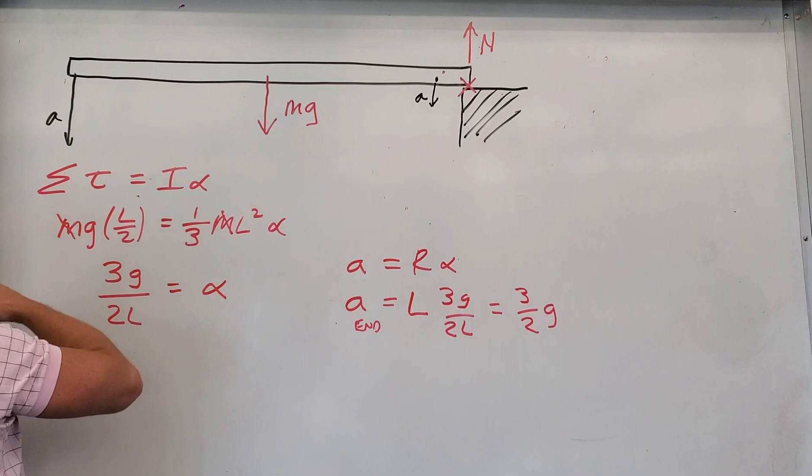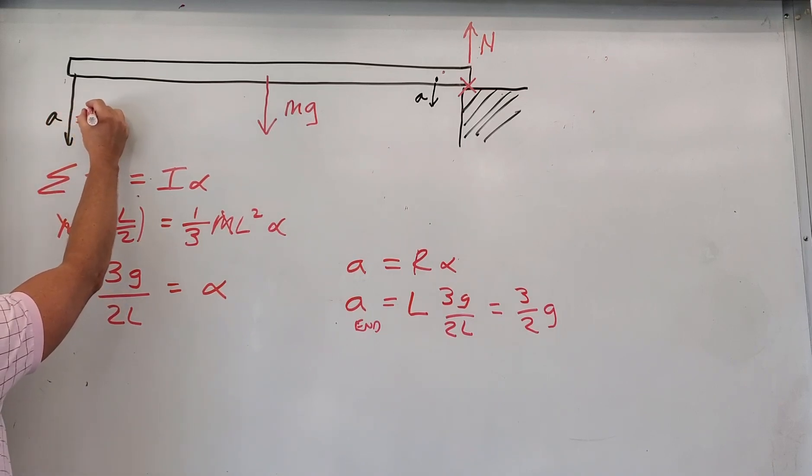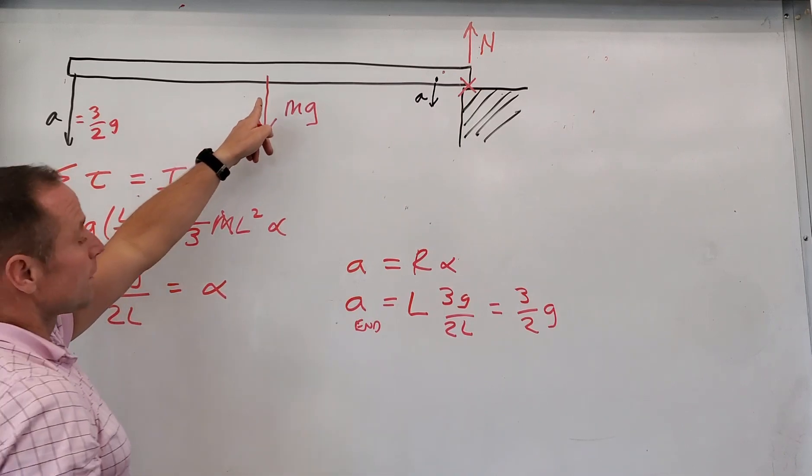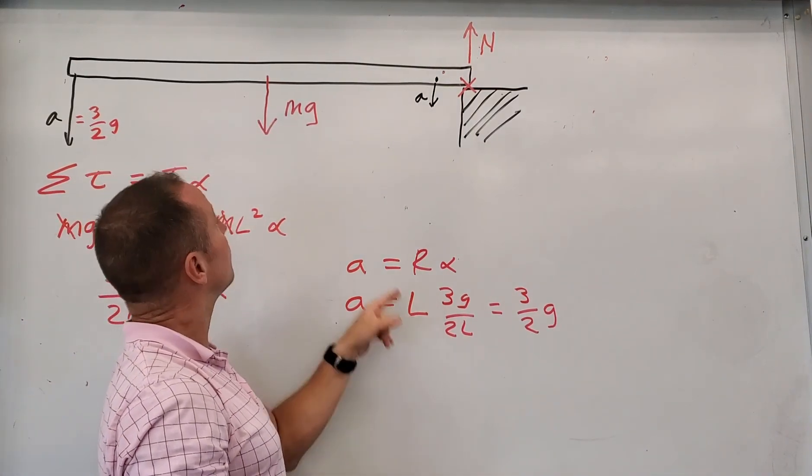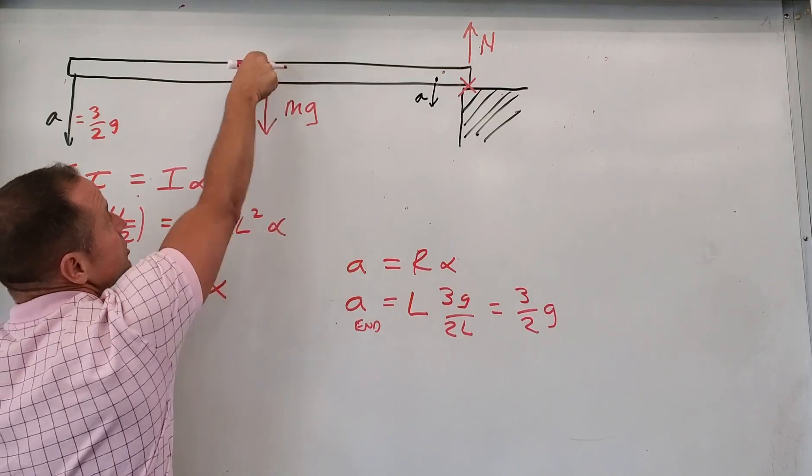So this end of the stick is going to go down with an acceleration of 3 halves g, where a point say in the middle of the stick, you'd put an l over 2 here, it would be only 3 fourths g here.